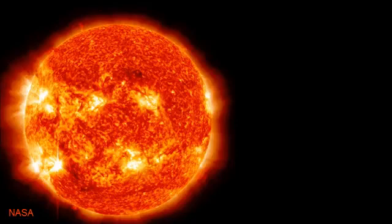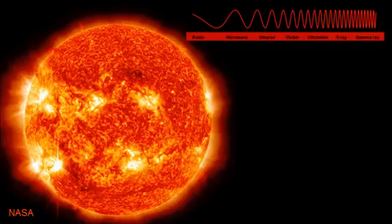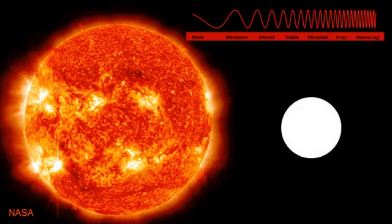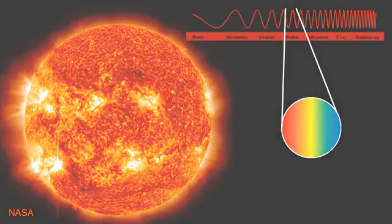We're constantly bombarded by energy from the sun in the form of electromagnetic waves. This energy is categorized, for our convenience, into seven different categories ranging from radio waves to gamma waves. We view a very narrow portion of this electromagnetic spectrum, which we refer to as the visible portion of the spectrum. This energy within the visible spectrum needs to be differentiated so that we can see images rather than just white brightness.